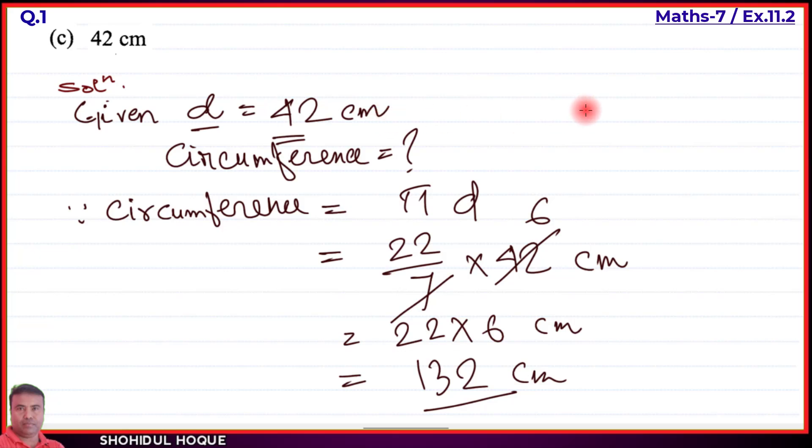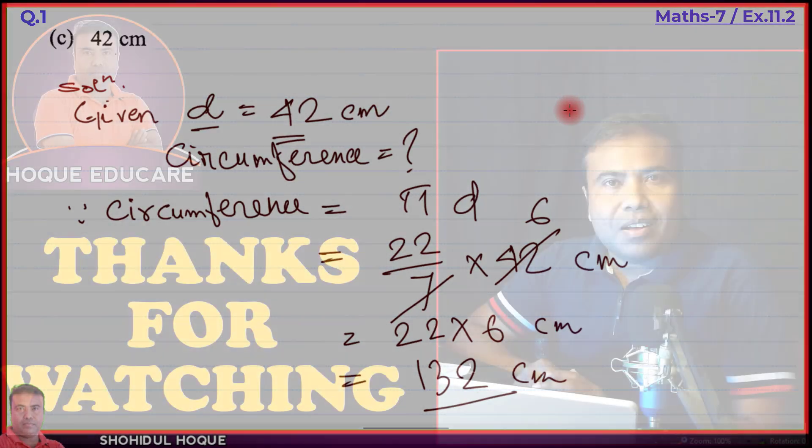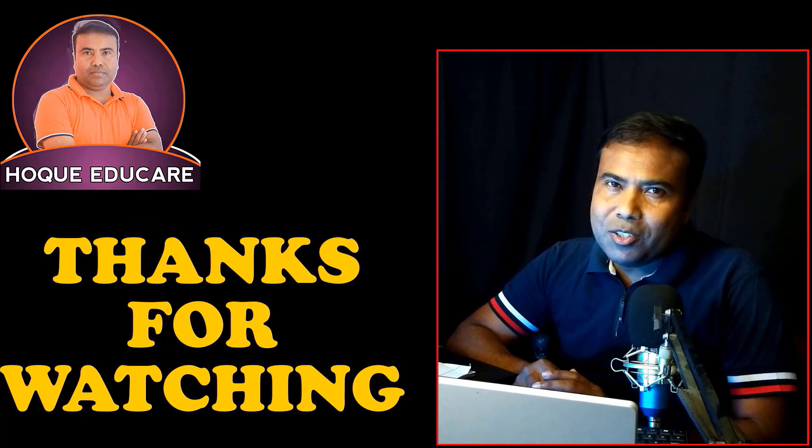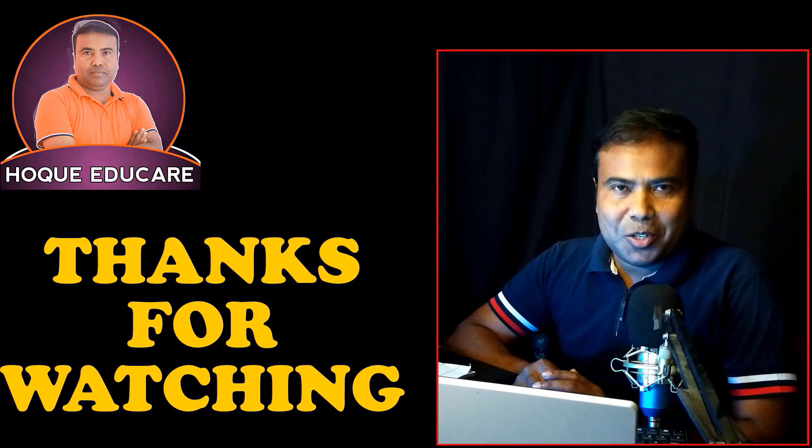So this is question number one, parts A, B, and C — all three problems solved. The circumferences are 88 cm for part A, 176 mm for part B, and 132 cm for part C. I will see you in the next video. Thank you.